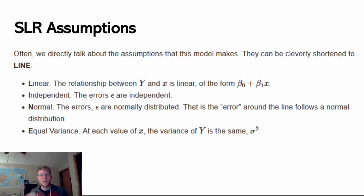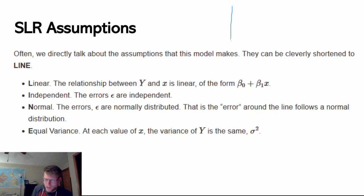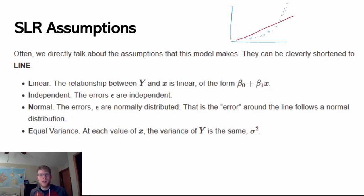Different people might organize these assumptions a little differently, but this is how we'll organize them for this class. The first assumption is that the relationship we're modeling really makes sense as a linear relationship — we shouldn't be fitting a linear model unless the scatter plot shows that makes sense. For example, I could have a relationship that looks parabolic, and I could fit a line through that data. I would be confident it's better than a constant model, but I can also look at the scatter plot and see it's a bad fit. So just because I could fit a line doesn't mean I should — I should use the type of function that makes most sense for this data.